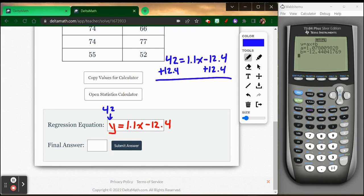On the right side, negative 12.4 plus 12.4, those cancel out. I get 1.1X. This equals, on the left side, 42 plus 12.4. Well, I get, let's see, 54.4. And now I'm going to divide by 1.1.